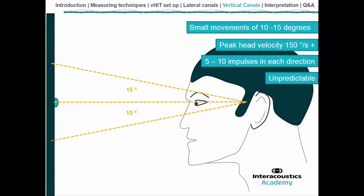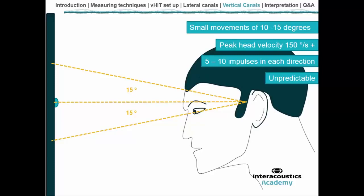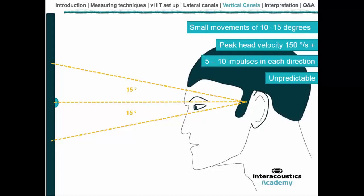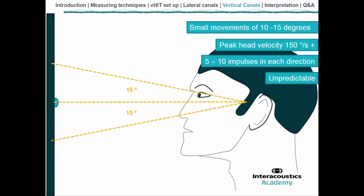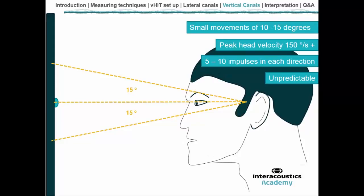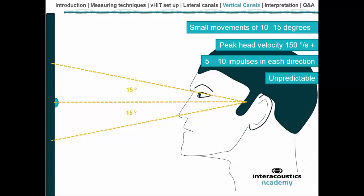Here is an animation showing the vertical canal thrust. We thrust the head downward at 15 degrees — that was a fast movement — then bring the head back to centre. We make it unpredictable and thrust upward this time, again at 15 degrees, with the patient still looking at the target. We complete 5 to 10 impulses in each direction to finish the vertical canals.